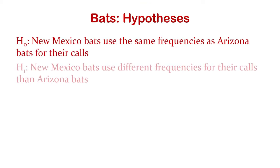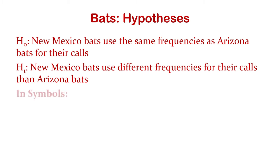We should specify our null and alternative hypothesis. The null hypothesis: New Mexico bats have the same frequency calls on average as Arizona. The alternative: they're different. In symbols, the New Mexico mean should be the same as the Arizona value.